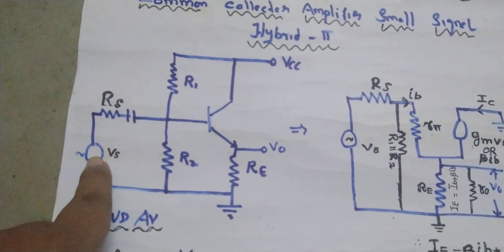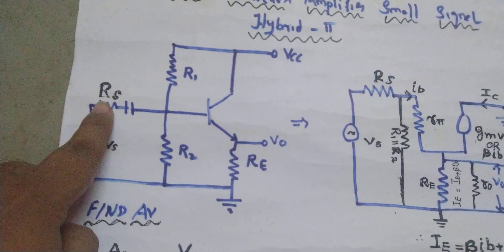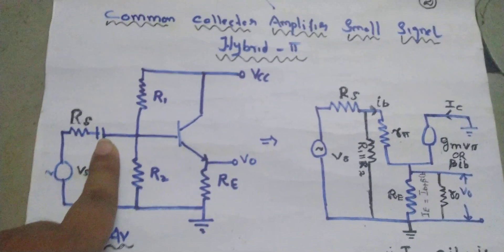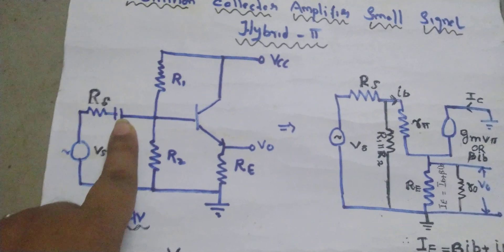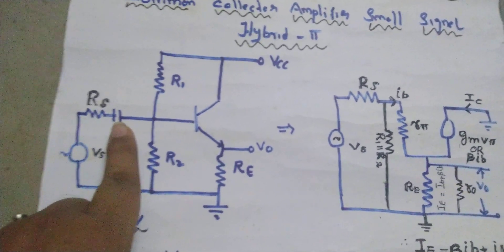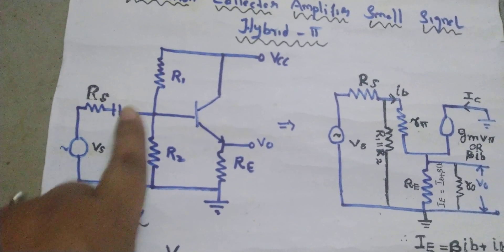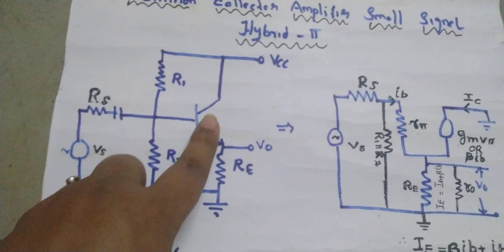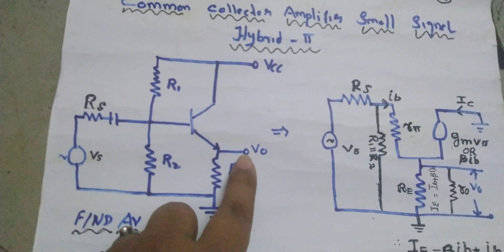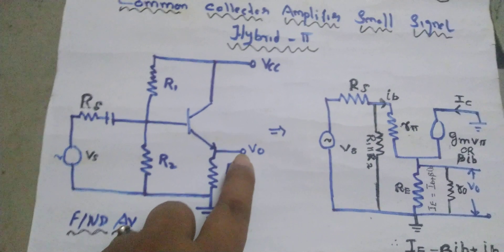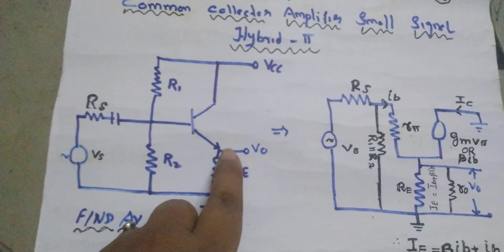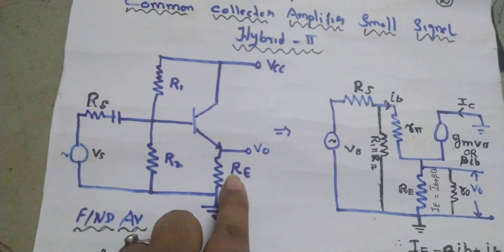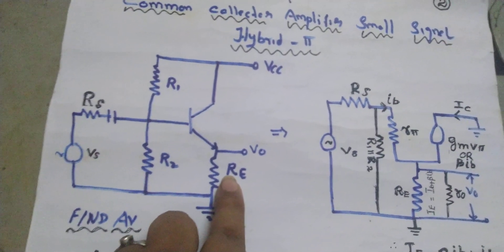VS is the input source voltage, RS is the source resistance. The input capacitor acts as an AC short circuit, so we don't need to consider it. R1 and R2 are the voltage divider resistors. This is the transistor, RE is the emitter resistor, and the output voltage is V-naught. One internal resistance, small r-naught, is also present in the circuit.